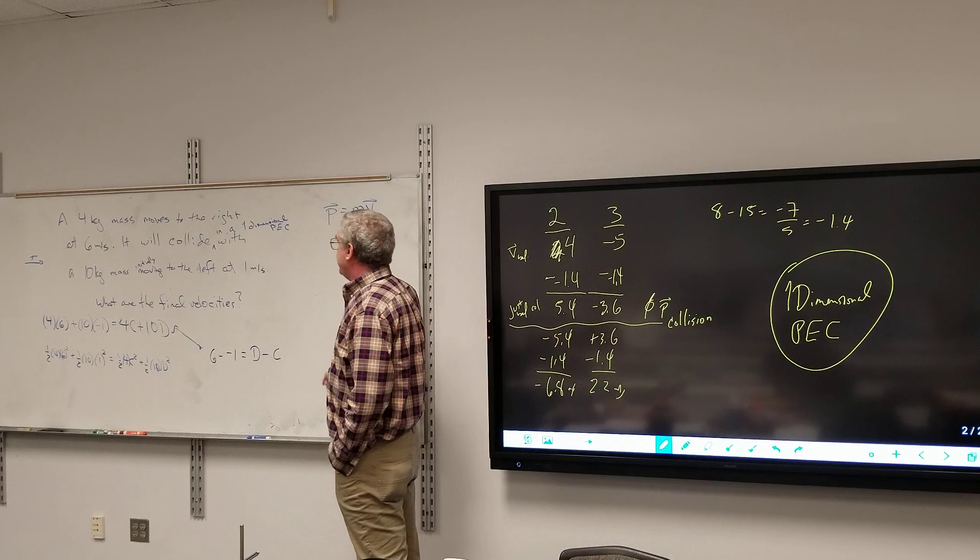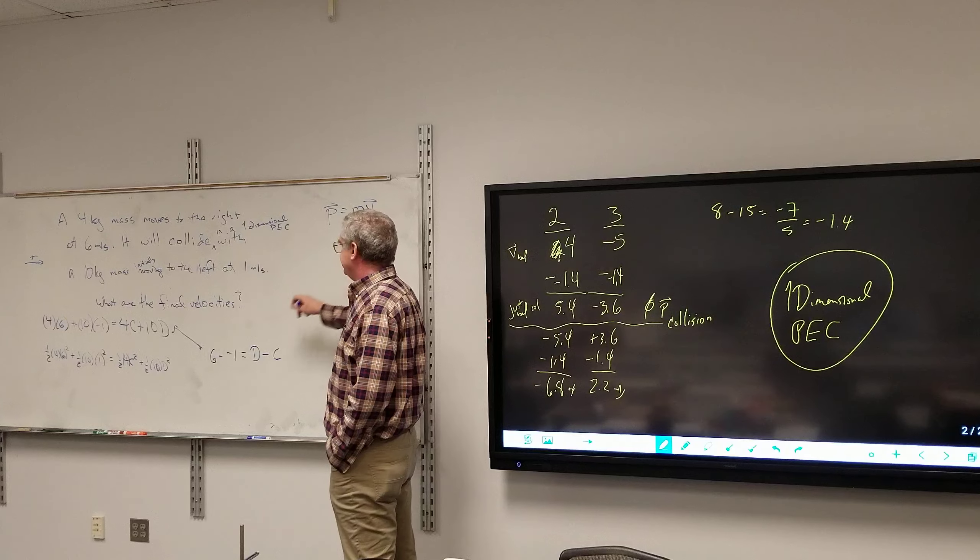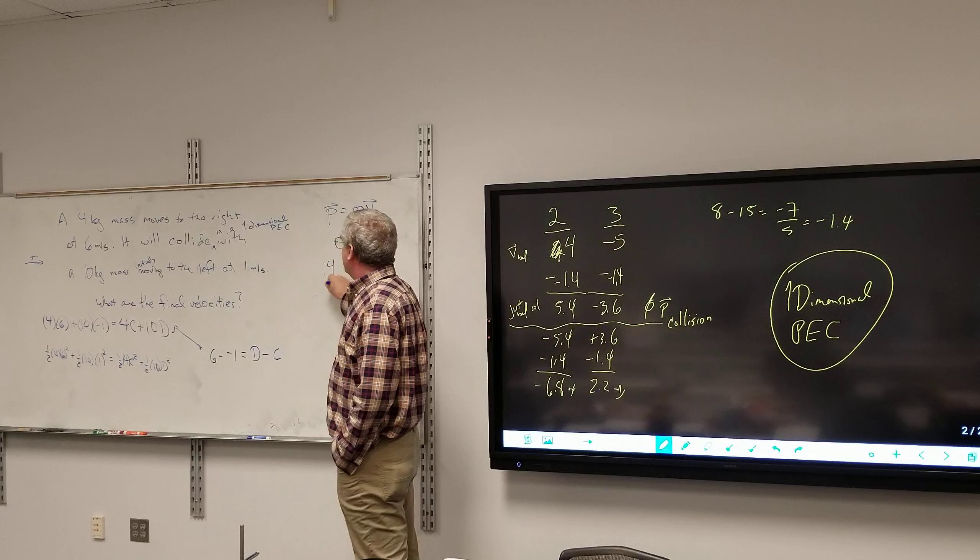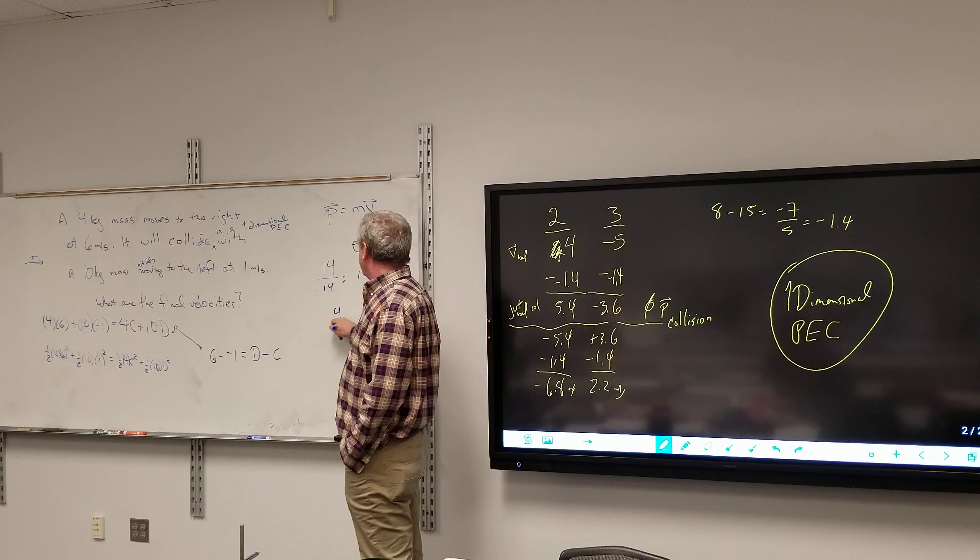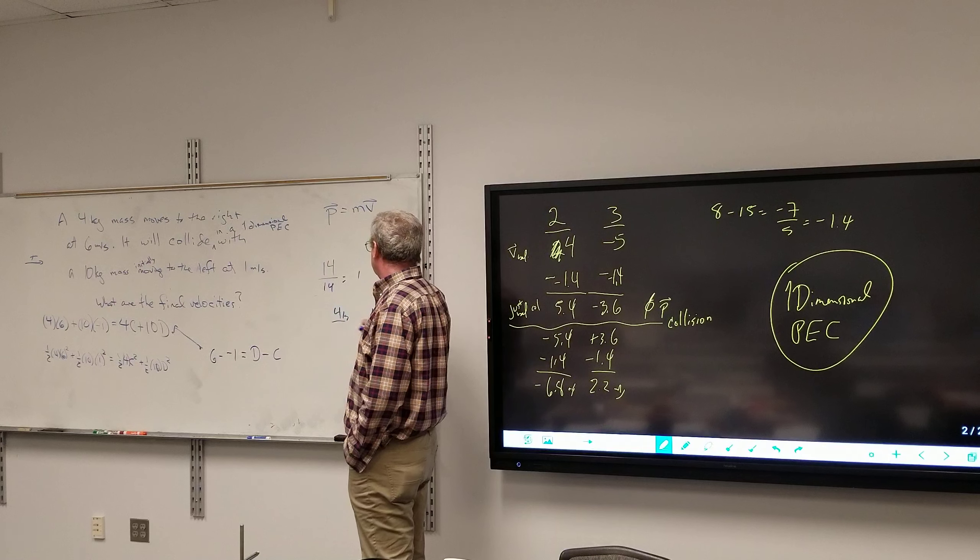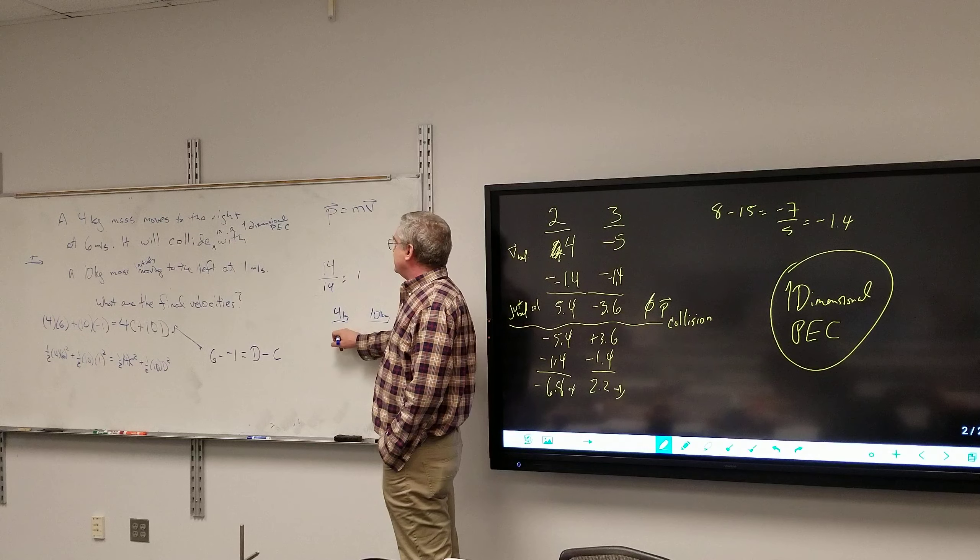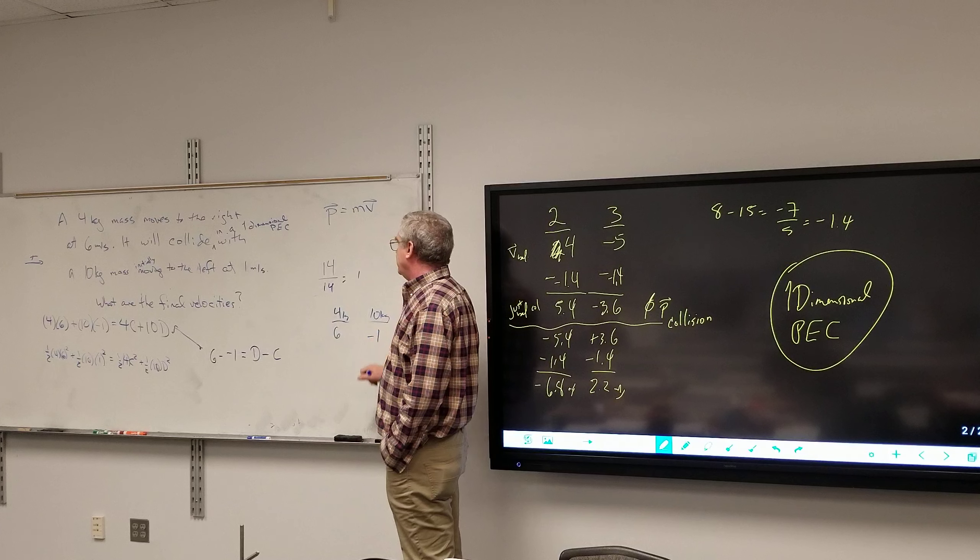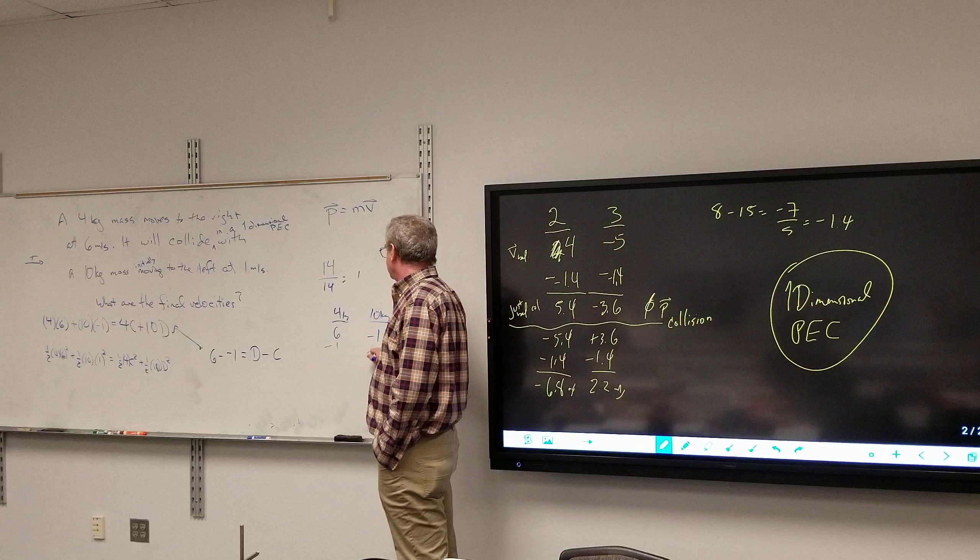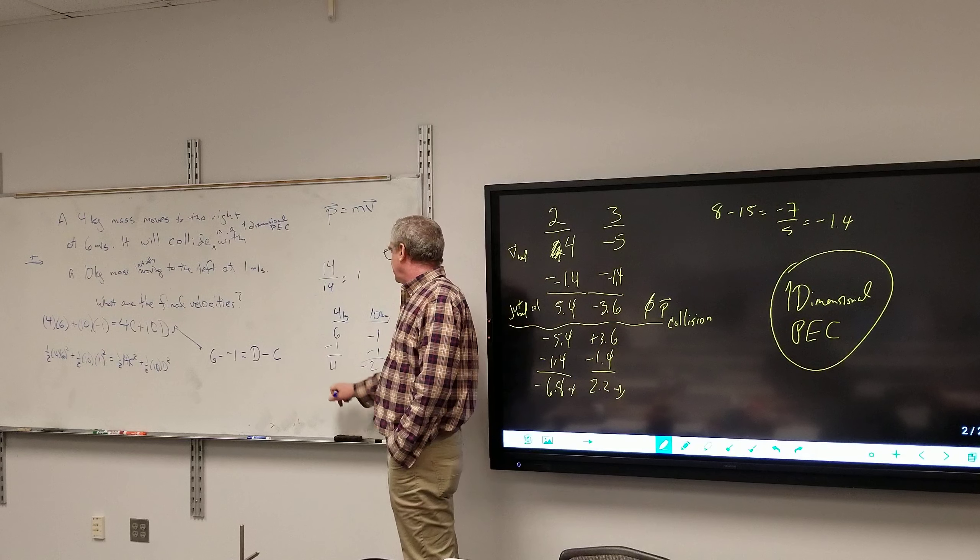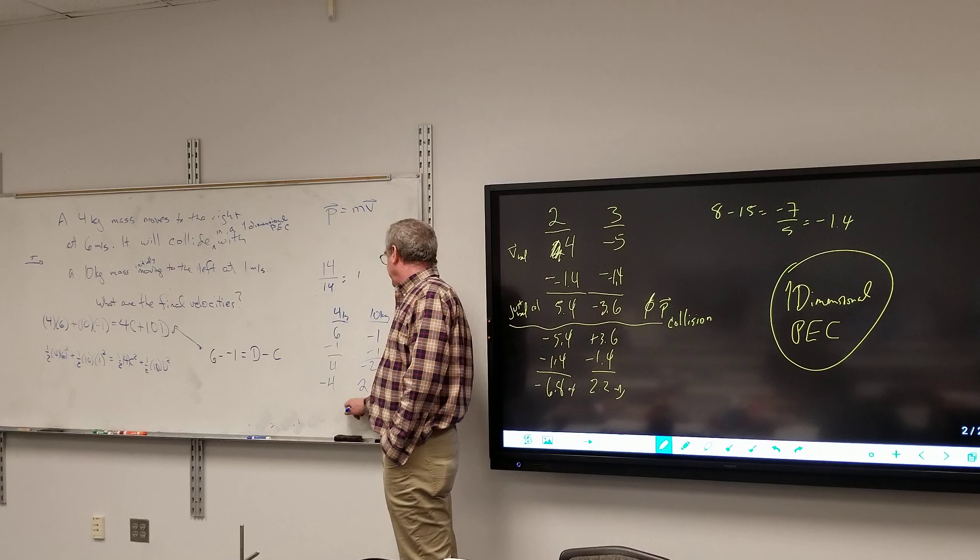In method 3, you look at the total momentum beforehand is 14. Divided by the total mass of 14, so you get 1. So if I do the 4-kilogram mass and the 10-kilogram mass, it's initially going at 6 and negative 1. Then I subtract 1. So I got 4 and negative 2. Then I flip the signs at the collision. And then I get back to the other frame.